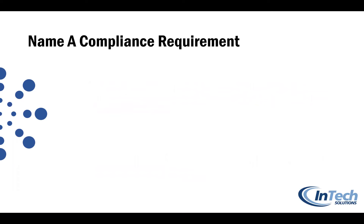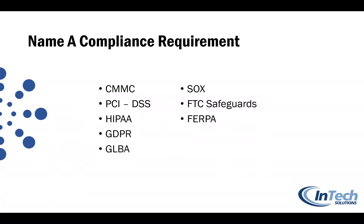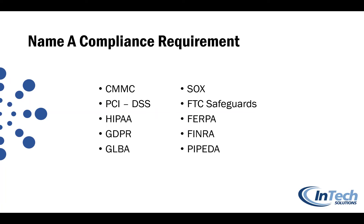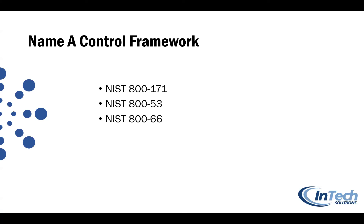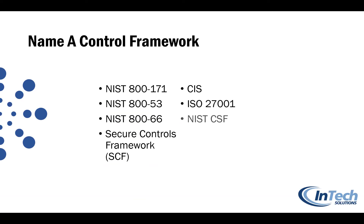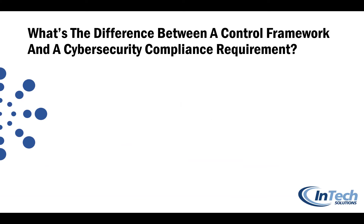Let's put ourselves in the mindset of compliance requirements. We know there's CMMC, PCI DSS, HIPAA, GDPR, GLBA, SOX, the FTC Safeguards, FERPA, and FINRA — none of this is new, compliance is everywhere, CMMC is just one of them. Then there are control frameworks like NIST 800-171, 800-53, 800-66, the Secure Controls Framework (SCF), CIS Controls, ISO 27001, the NIST Cybersecurity Framework, and COBIT.